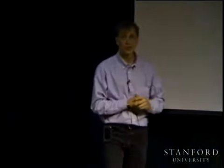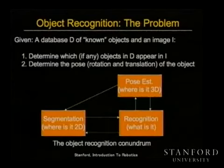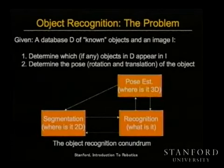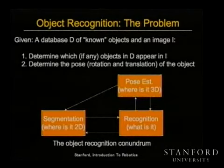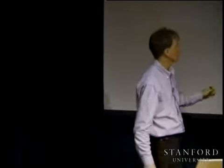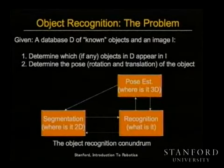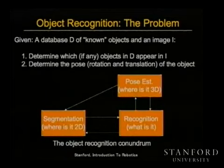Object recognition is a chicken-and-egg problem. If I want to recognize an object, I don't know its identity, where it is, and what's being presented to me. I don't know if I'll see the front, back, or top of my cell phone, or if half of it is hidden. There are huge unknowns in appearance, plus segmenting and identifying it. If I could segment the object, recognition and pose would be fairly easy. But doing all three — segmentation, recognition, and pose estimation — simultaneously is hard.